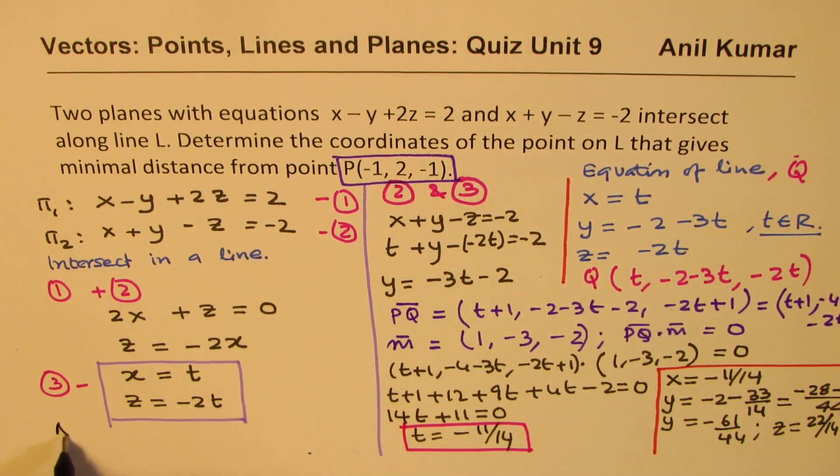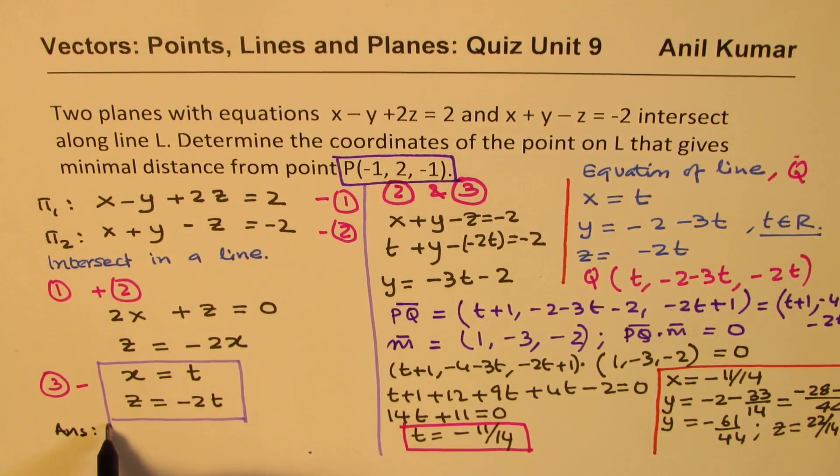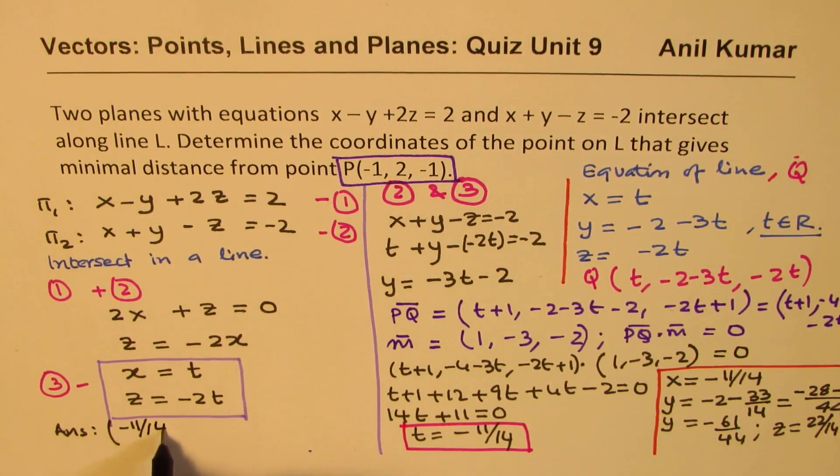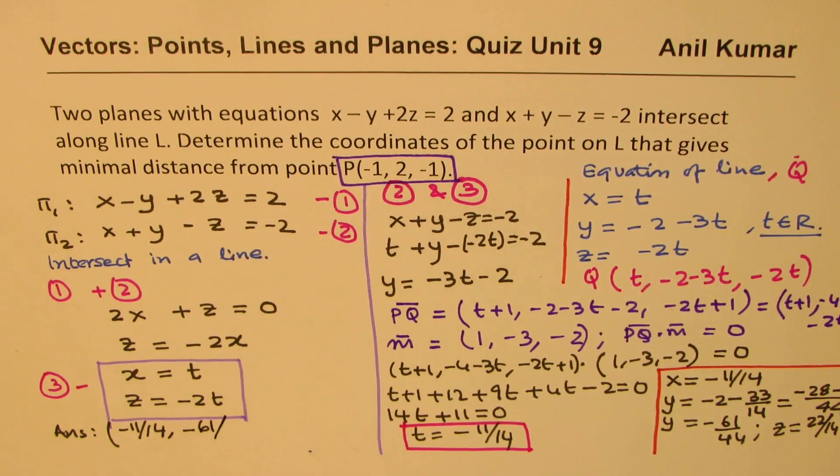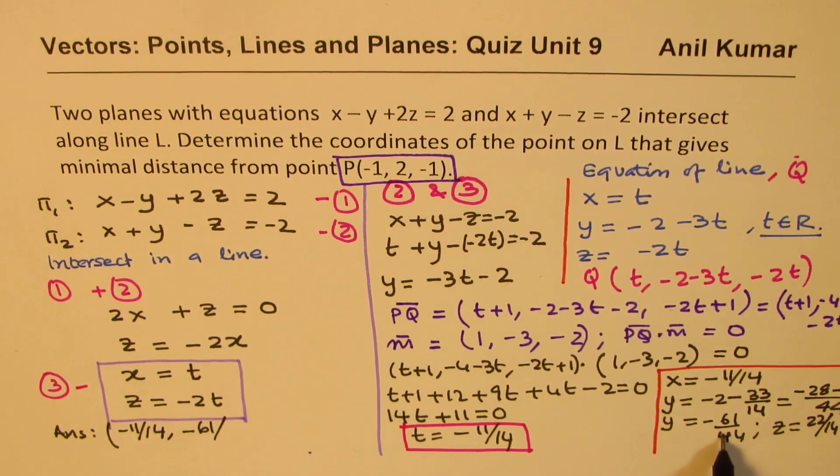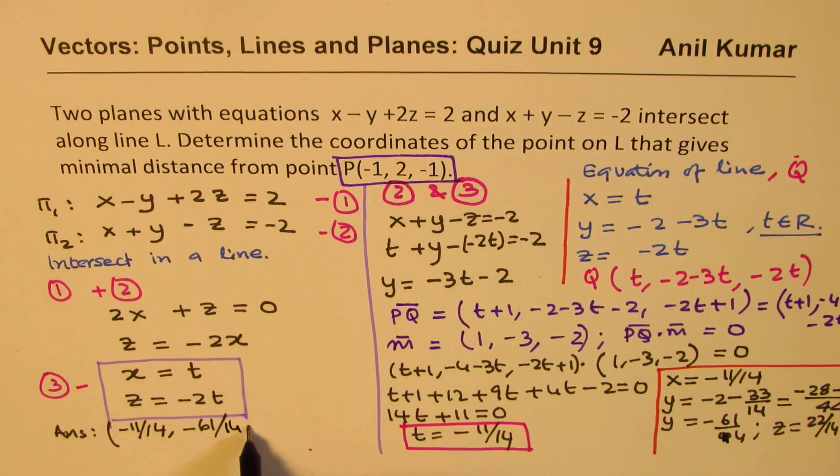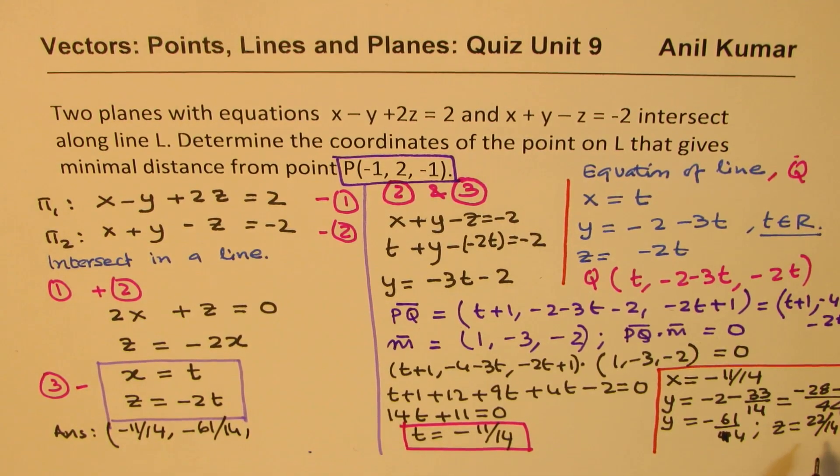Let me write down the answer. The point will be minus 11 over 14, y value of minus 61 over 14, and z value is 11 over 7.